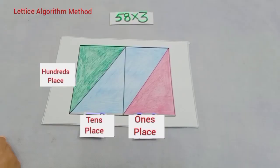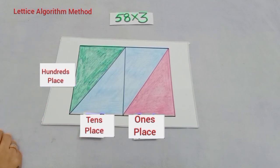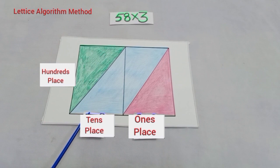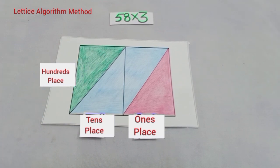Now you can see we have done different colors for different diagonal areas. You can see in the picture, pink color tells us about ones place and blue color tells us about tens place and green color tells us about hundreds place.